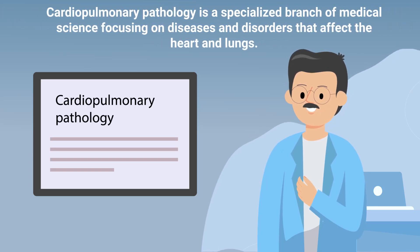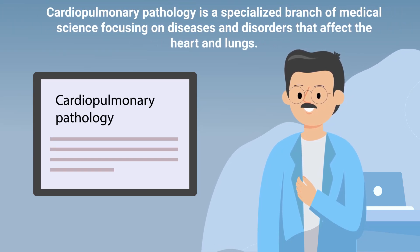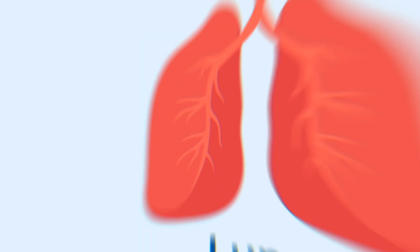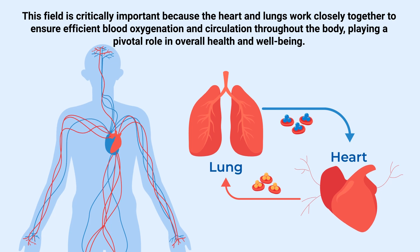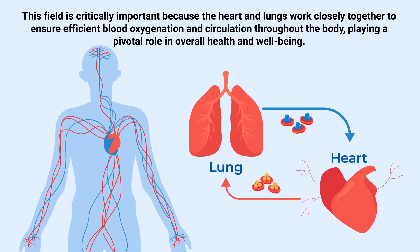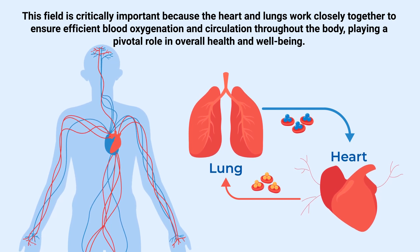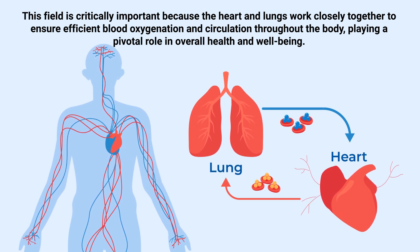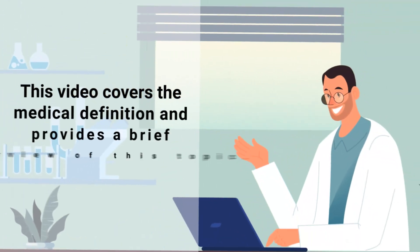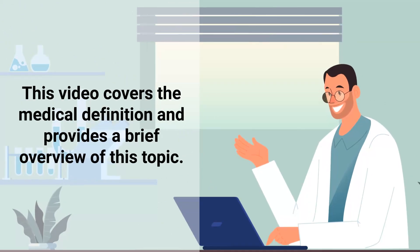Cardiopulmonary pathology is a specialized branch of medical science focusing on diseases and disorders that affect the heart and lungs. This field is critically important because the heart and lungs work closely together to ensure efficient blood oxygenation and circulation throughout the body, playing a pivotal role in overall health and well-being. This video covers the medical definition and provides a brief overview of this topic.